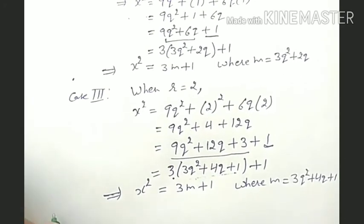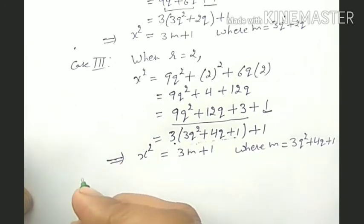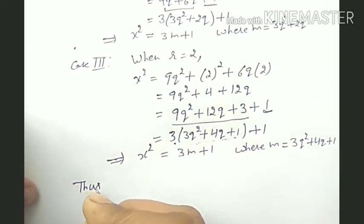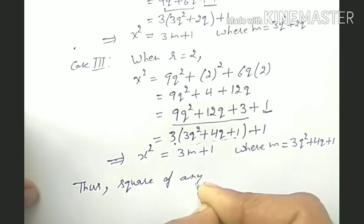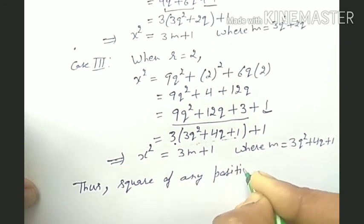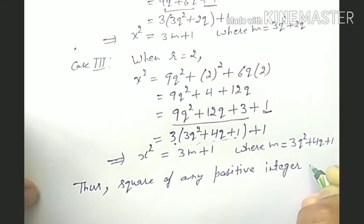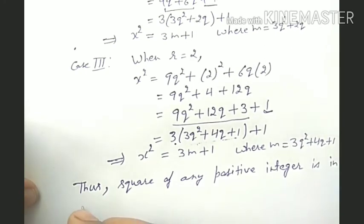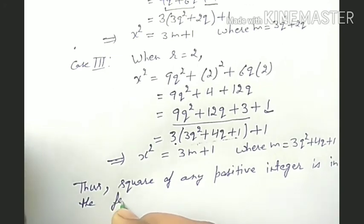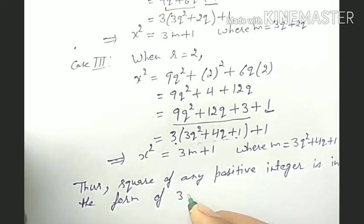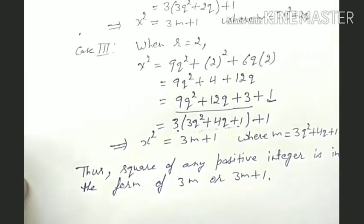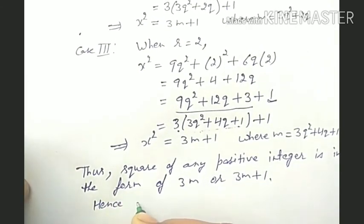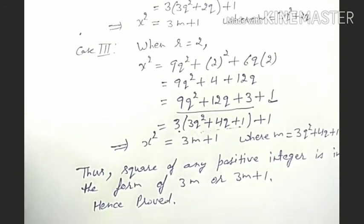Hence we can say that the square of any positive integer is of the form 3m or 3m plus 1. Hence proved, and our question is completed. Students, if you have any doubt then please write in the comment box and I will give you the answer. Thank you. Have a nice day.